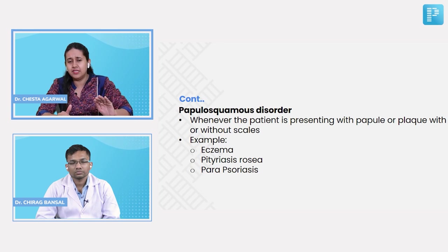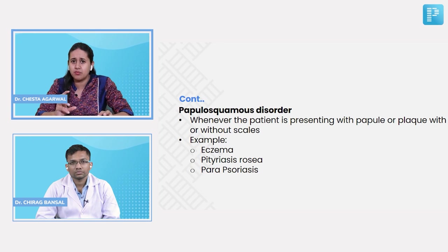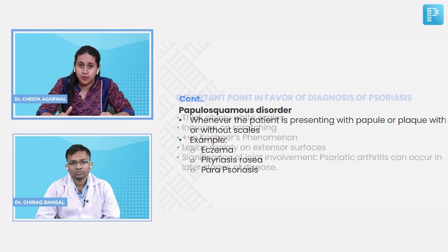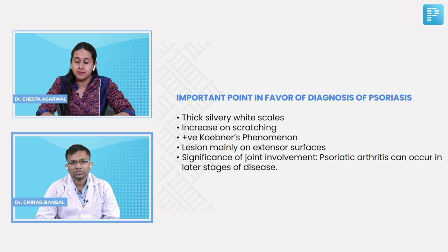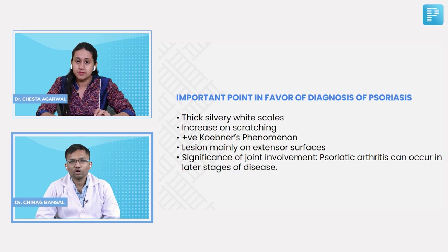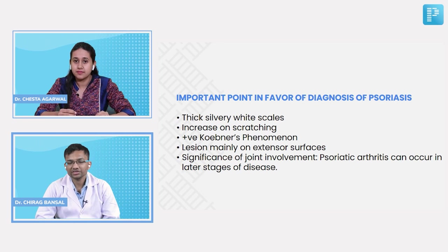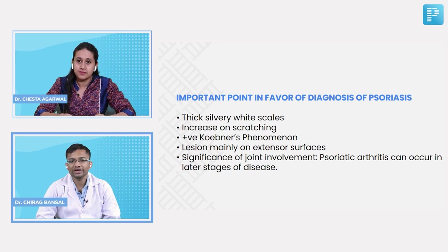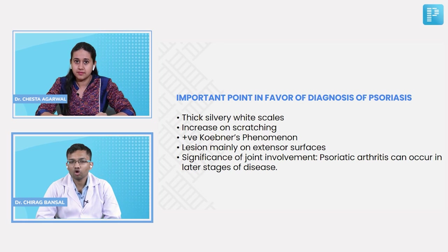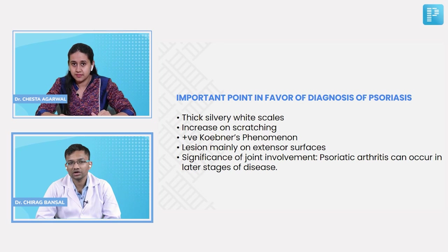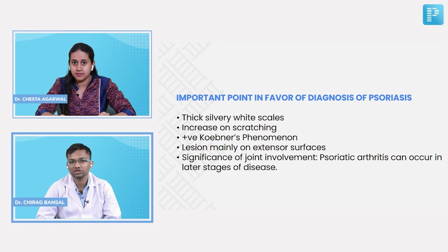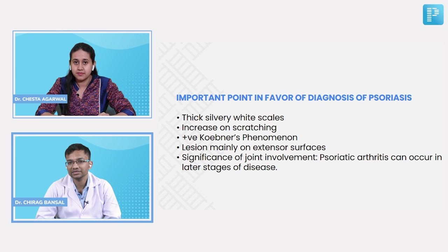With just this chief complaint, what are the important points that can help with diagnosis? The patient is having thick silvery white scales that increase on scratching, suggesting positive Koebner's phenomenon. Additionally, these thick silvery white scales with well-defined erythematous papules are seen on the extensor surface, so we may think of psoriasis.